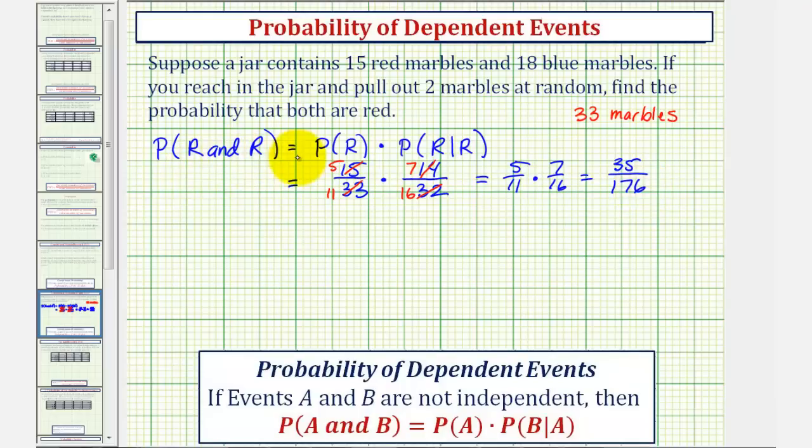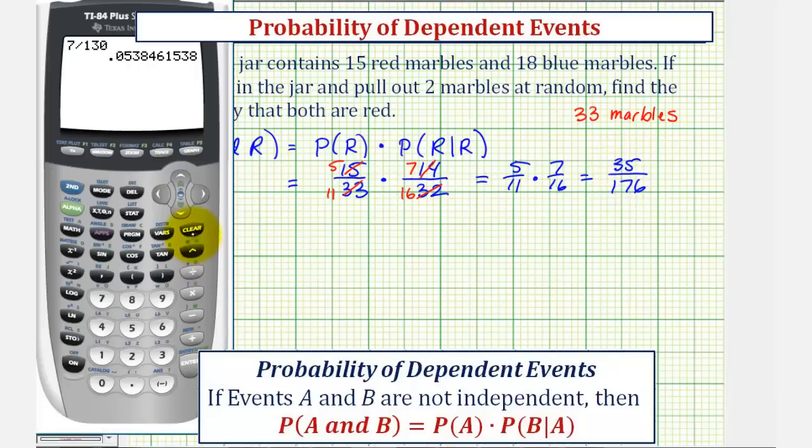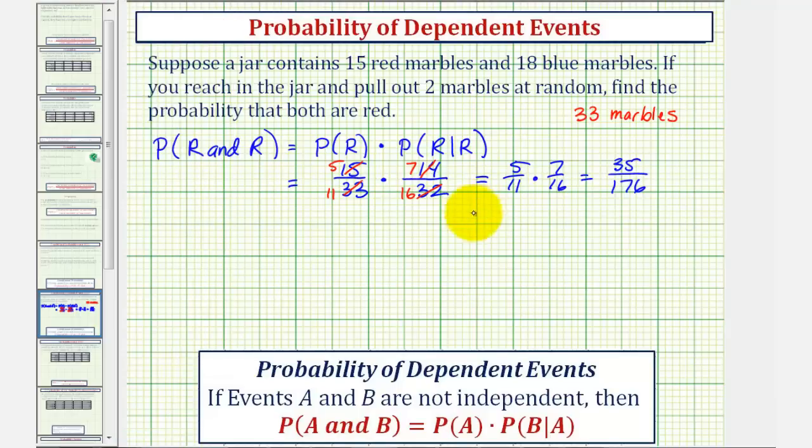Let's also write the probability as a decimal and percentage. To convert to a decimal we divide, so we'd have 35 divided by 176. Let's round to four decimal places. Notice how this would be approximately 0.1989. The six indicates to round up, so this is an approximation, 0.1989. As a percentage this would be 19.89 percent.